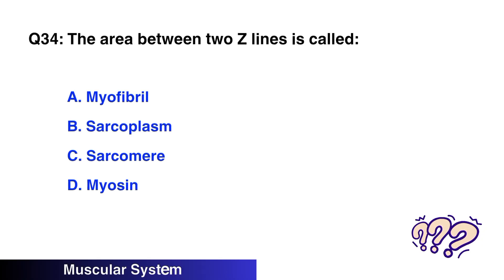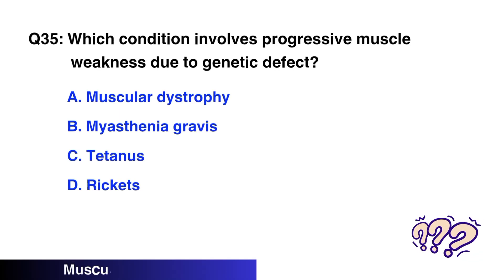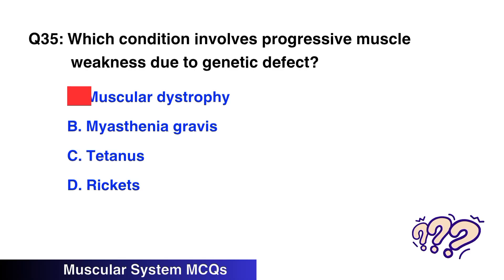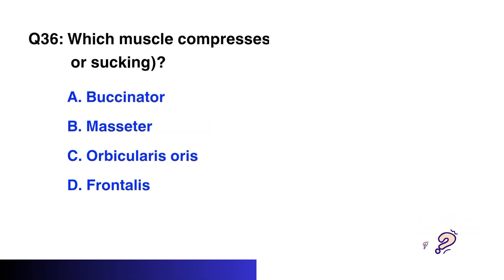Question No. 34: The area between two Z-lines is called — the right option is C: Sarcomere. Question No. 35: Which condition involves progressive muscle weakness due to a genetic defect? The right option is A: Muscular dystrophy.